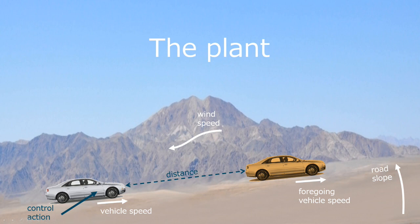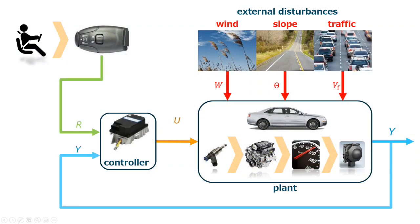Let's take a look at the plant under consideration. The goal is to control the distance between the two vehicles despite the disturbances on wind speed, road slope, and foregoing vehicle speed. This is the technological scheme of the problem, with the control action actuating on the main vehicle's engine to keep the reference distance to the foregoing vehicle.